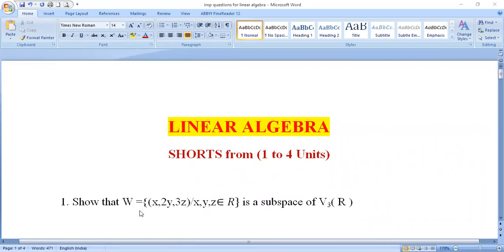First question: Show that W = {(x, 2y, 3z) : x, y, z ∈ R} is a subspace of V₃(R). For this, we need to check the subspace conditions and apply the subspace properties.